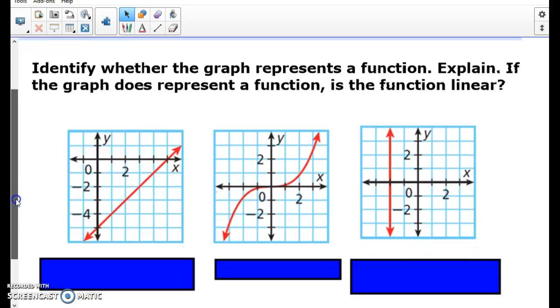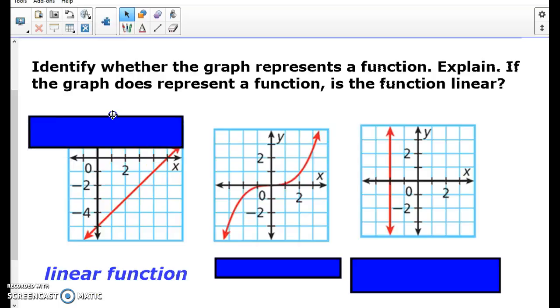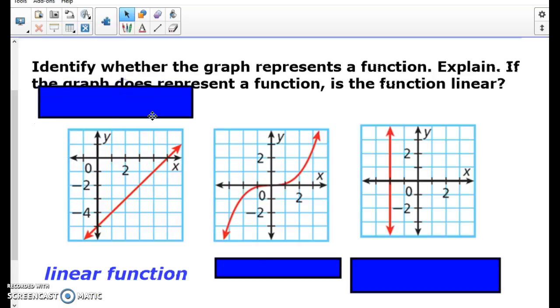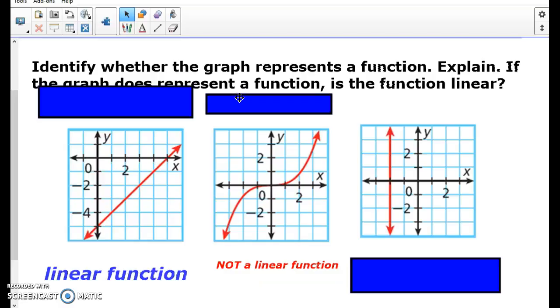Here's three different kinds of graphs, and we have to say if it is linear or not. So this one right here is a straight line going from left to right. Yes, it would be a linear function. This one has some squiggly lines, so it is not linear.